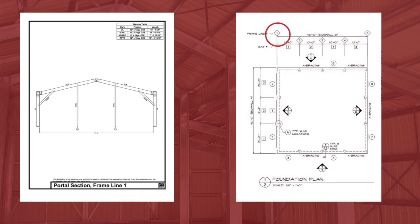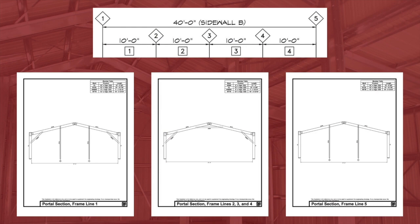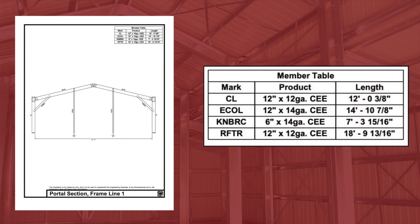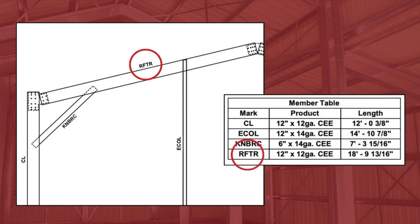Moving on, you will see the next diagram is labeled Portal Section Frame 1. Going back to our engineering drawings, we can see which part of the building we're looking at by referencing the numbered diamonds. On this building, we have a drawing for Portal Frame Line 1, a drawing for 2, 3, and 4, and another drawing for Portal 5. Portals 2, 3, and 4 are the same, which is why there's only one drawing for the three interior sections. At the top right of each section drawing, we have a key that indicates what components are to be used on that section, including a description and piece mark. These components are labeled on the drawing by their piece marks. When you receive delivery from the factory, the individual framing members will have piece marks printed directly on them. Everything you need to locate the components on the job site is right here.